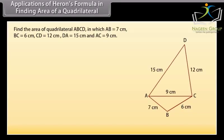Find the area of quadrilateral ABCD in which AB = 7 cm, BC = 6 cm, CD = 12 cm, DA = 15 cm and AC = 9 cm. To find its area we divide it into two triangles. Let us now find the area of these triangles one by one.